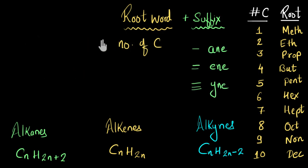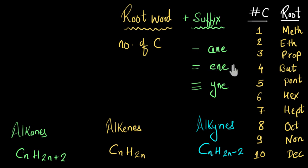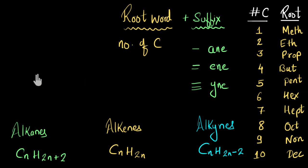In this video we saw how to name hydrocarbons: first, give a root word depending on the number of carbon atoms; second, give a suffix depending on whether it belongs to the alkane, alkene, or alkyne family. If given the structure, look for double or triple bonds to find the suffix. If given the molecular formula, use the general molecular formulas for alkanes, alkenes, and alkynes to figure out the suffix.